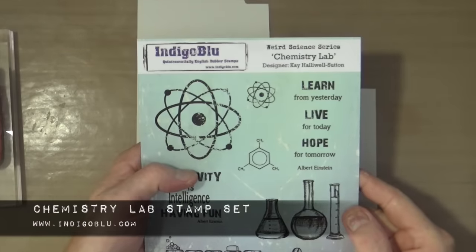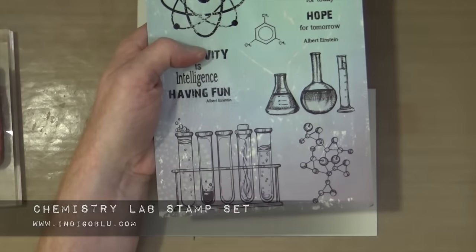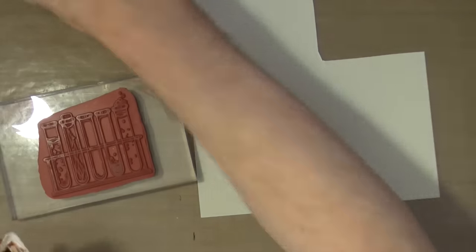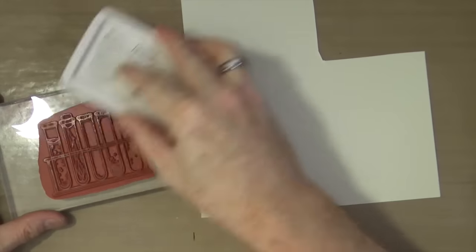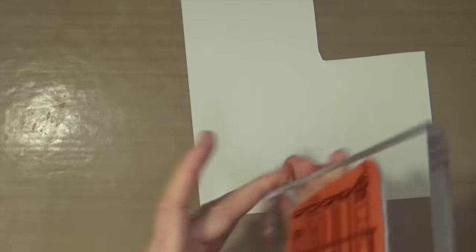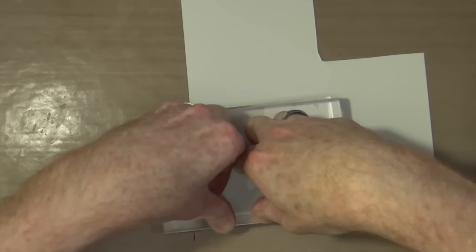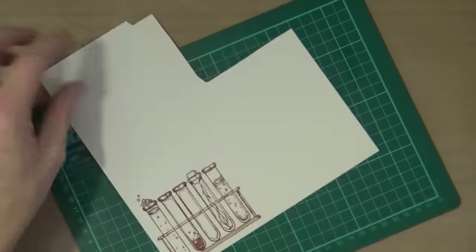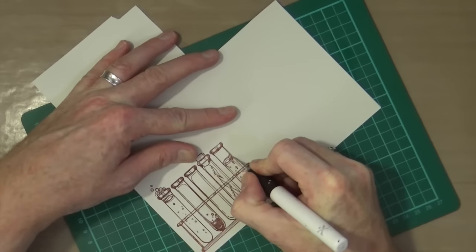For my next embellishment for the canvas, I'm going to be using the test tube elements from the chemistry lab stamp set, again from Indigo Blue, and again using the same ink to make sure that we have that continuity throughout the entire project. I'm going to use the sepia ink and stamp down using the same card that I also used for the owl, and again I'm going to cut it out with my craft knife.